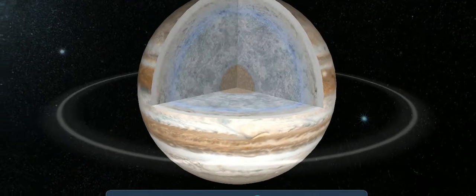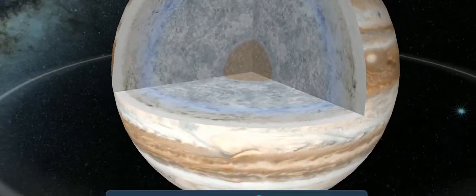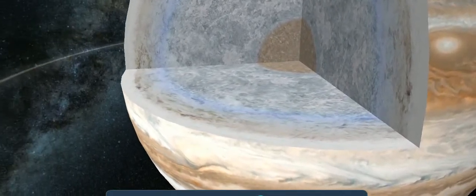Jupiter's atmosphere consists of 90% hydrogen and helium, but it also contains traces of methane, ammonia, and water vapor.